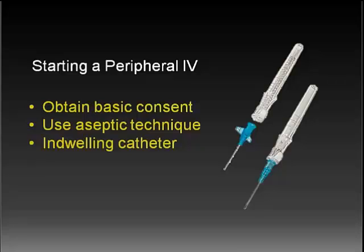An indwelling catheter set with a flexible plastic cannula should be used whenever a mechanical injector will be used for contrast media injection. The use of metal needles, such as a butterfly, should be avoided in conjunction with mechanical power injectors as they may contribute to contrast media extravasation and patient injury. Whenever possible, catheters and ancillary components in the contrast fluid path should be specifically designed for the pressure and flow rate capability with the parameters that will be programmed for the power injection. An indwelling catheter set typically consists of a plastic catheter and hub, a beveled needle and hub, a beveled position indicator, and a flashback visualization chamber.